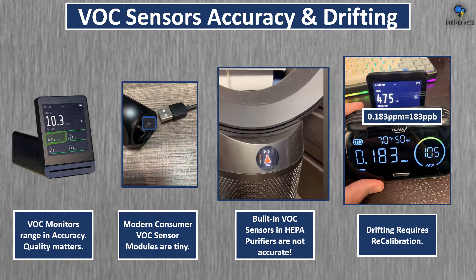VOC sensor accuracy and drifting. VOC monitors range in accuracy — some are far more accurate than others. Some VOC sensors are incredibly tiny. The built-in VOC sensors in your HEPA purifiers are usually very inaccurate; I do not recommend using these sensors. In the last image, both air monitors use the exact same sensor from two different companies — one shows 475 parts per billion, another shows 183 parts per billion, because the rear air monitor drifted.